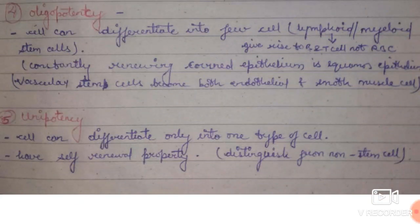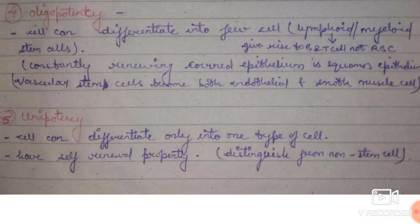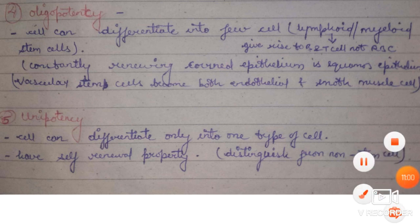Unipotency refers to cells which can differentiate and give rise to only one type of cell. For example, sperm cells can differentiate and give rise to only sperm, and oogonia can give rise only to ovum. Gamete cells are cells which can give rise to only a single type of gamete. Their only property distinguishing them from non-stem cells is the self-renewal property.